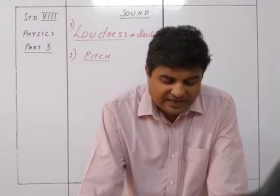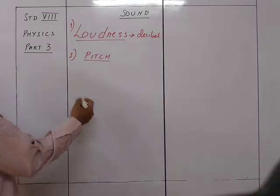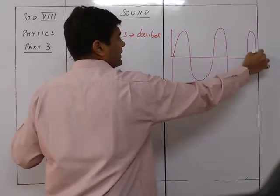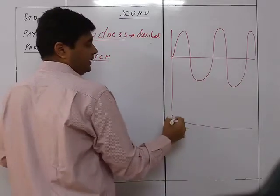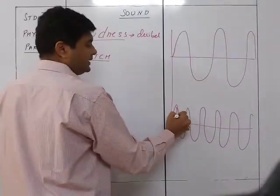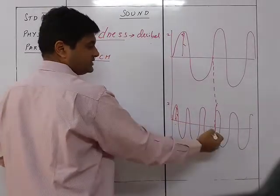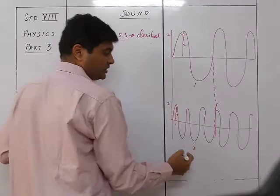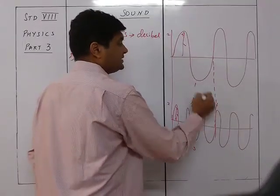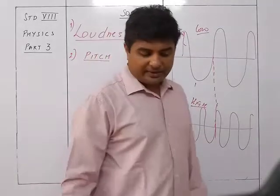Two notes played on the same instrument with the same amplitude will differ in pitch when their vibrations are at different frequencies. Consider two waves: both have an amplitude of two units, but one has three waves in the same time interval while the other has only one. The wave with more oscillations has a higher frequency and is therefore a high-pitch sound, while the other is low pitch.